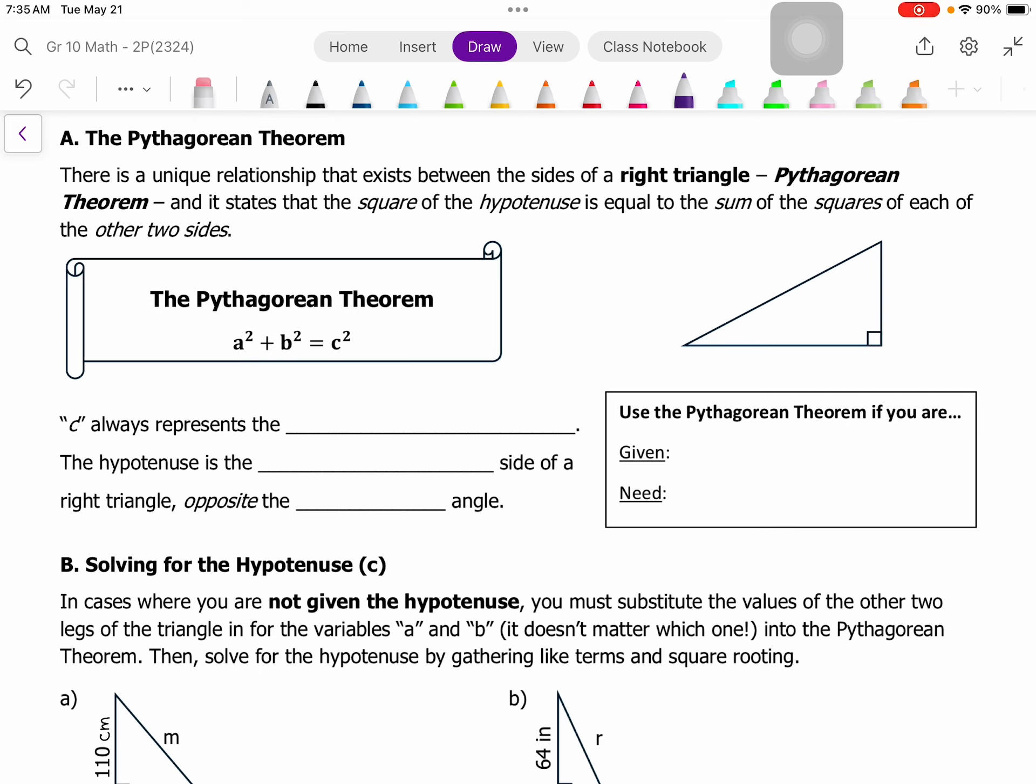So the Pythagorean Theorem is a theorem that has to do with only right triangles. And you probably have heard it before as a squared plus b squared equals c squared.